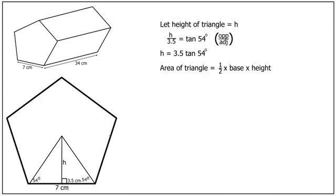The area of the whole triangle is given by half the base multiplied by the height, which is half of 7 multiplied by 3.5 tan 54 degrees.